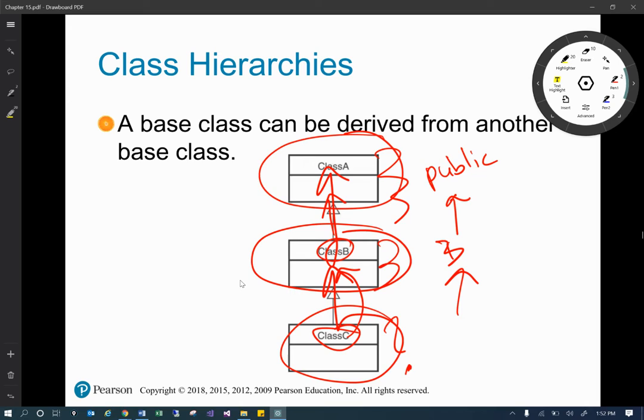Anything in Class A that's public is going to be seen by Class B and then also Class C. So that's how that works. So when it comes to inheritance and these class hierarchies, the things that you've been taught before still applies. Just kind of keep in mind if Class B is able to see it from Class A, actually to take that back.